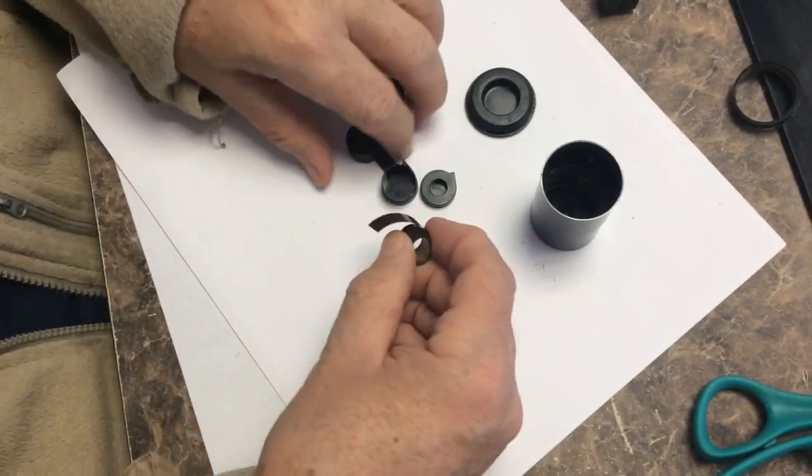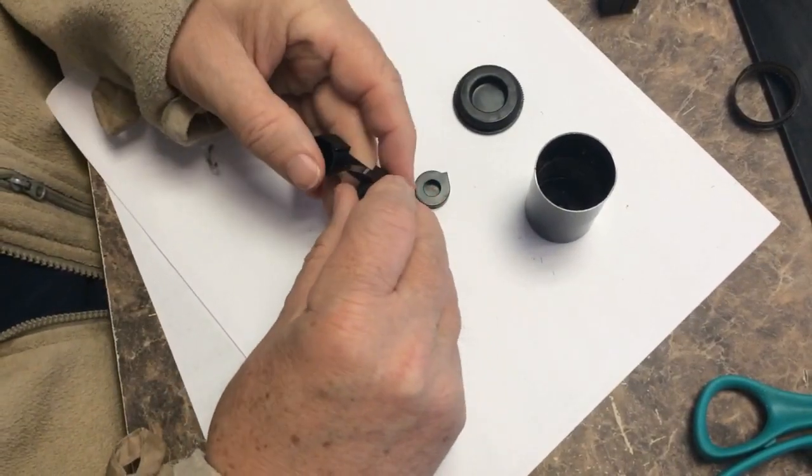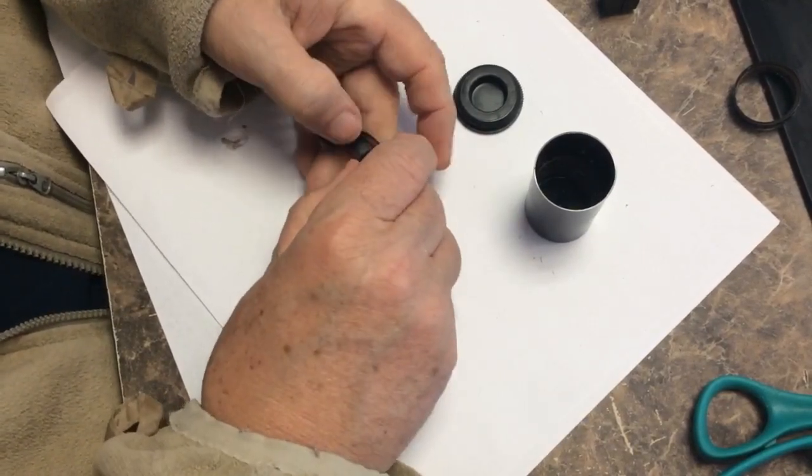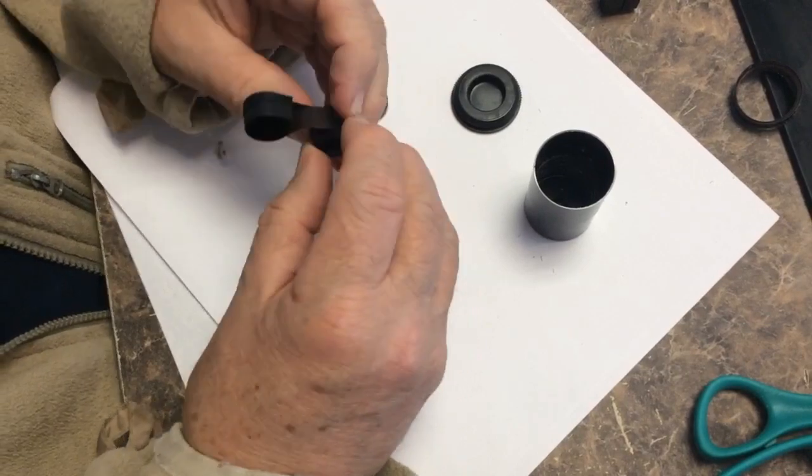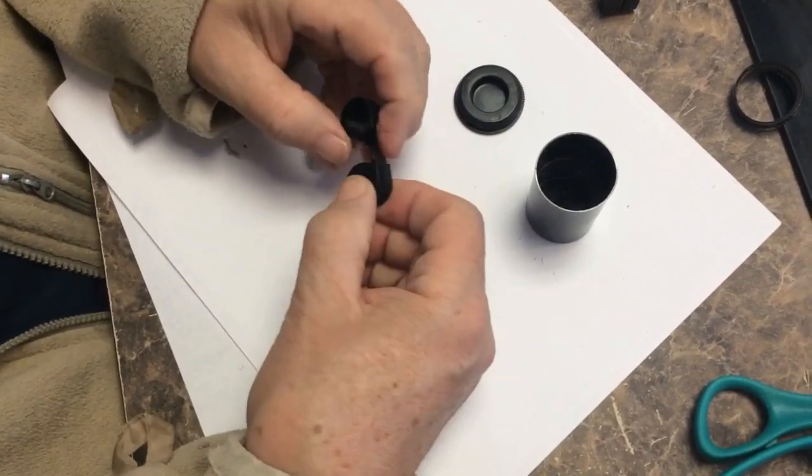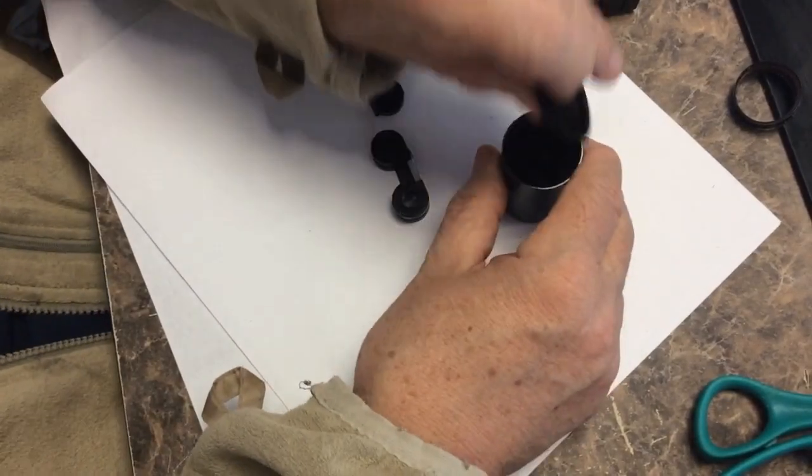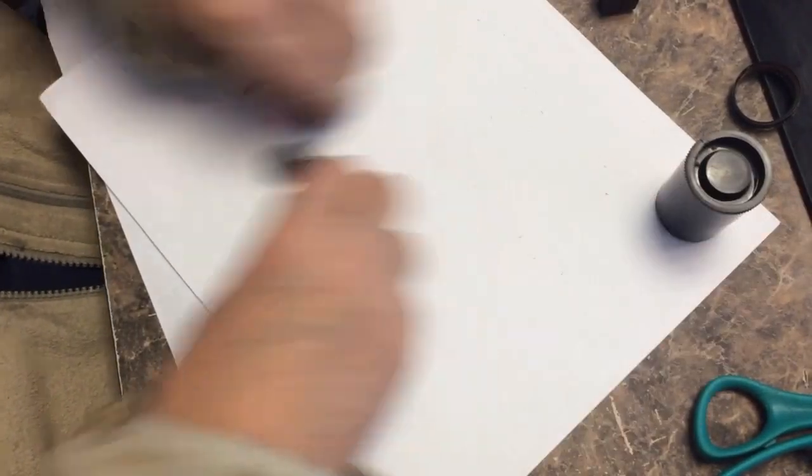And again, this is all, we're still in the dark. Now we're going to put this in, close that. Now once we close that and we close our little film canister up so we don't expose our film, we can then go into the light.